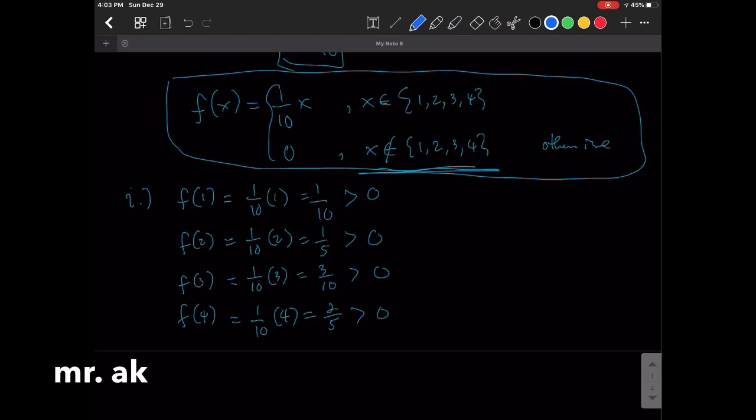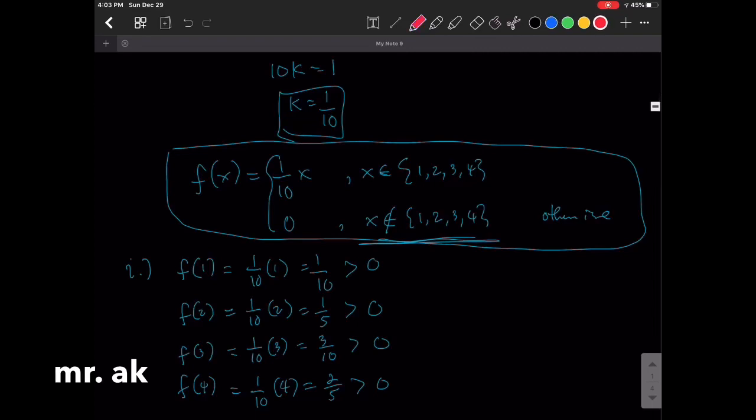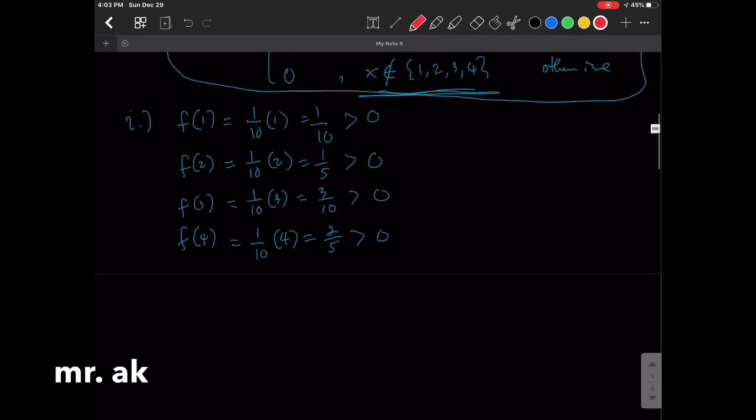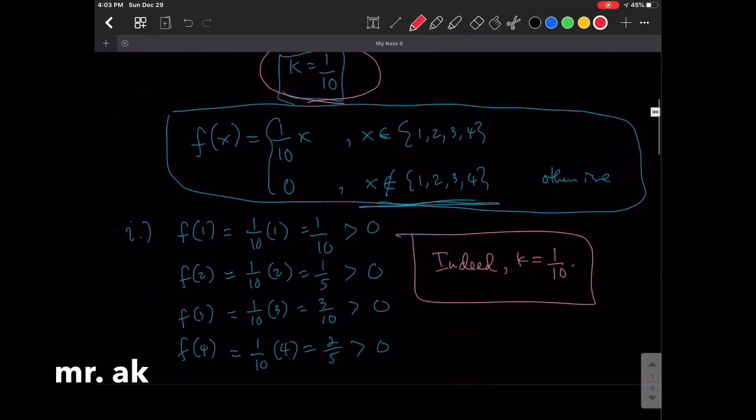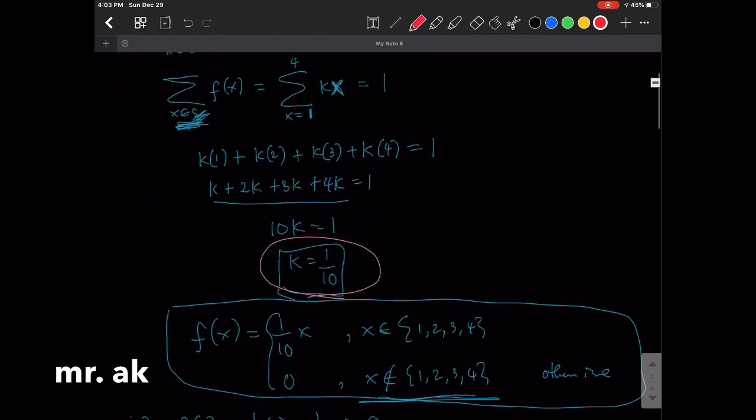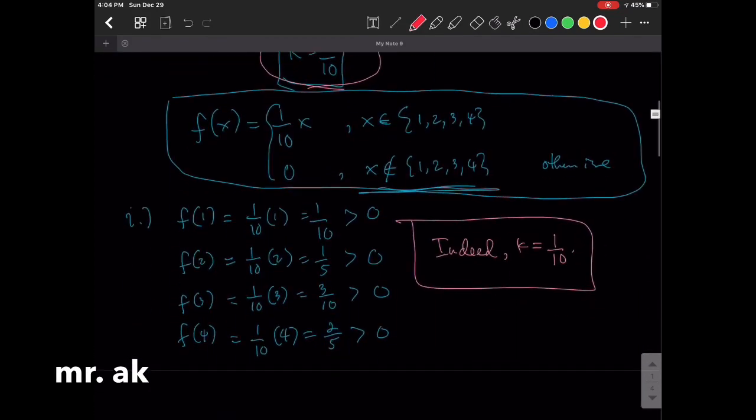And so, therefore, our answer a while ago that k equals 1 over 10 is correct. So, indeed, k equals 1 over 10 because it satisfies both conditions for a probability mass function.